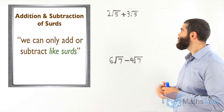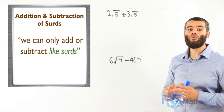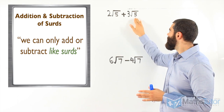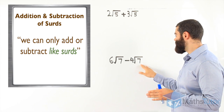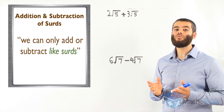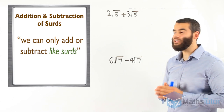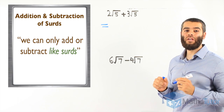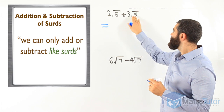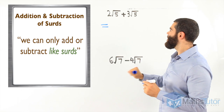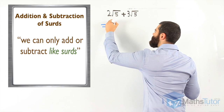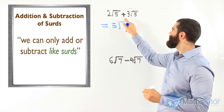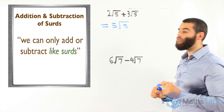The first example: 2 root 5 plus 3 root 5. Are they like thirds? Root 5 and root 5 are like thirds — that means we can add them. We add the whole numbers: 2 plus 3 is 5, and we keep the root 5 the same. So 2 root 5 plus 3 root 5 is 5 root 5. It's that simple.